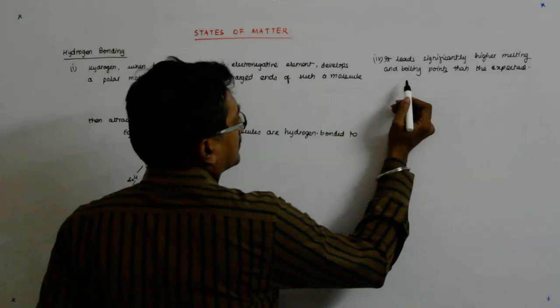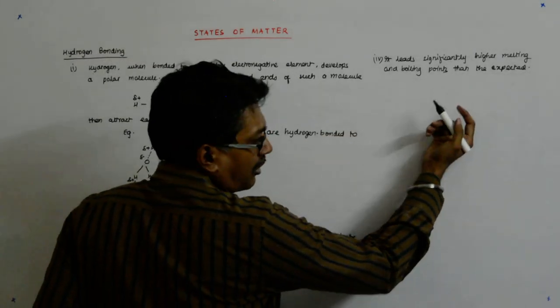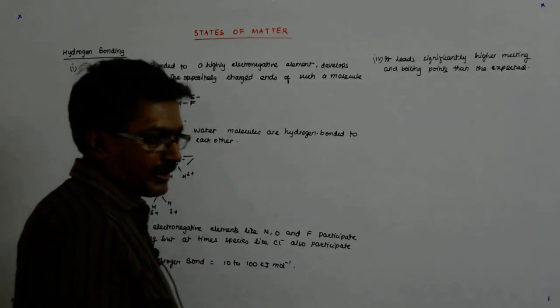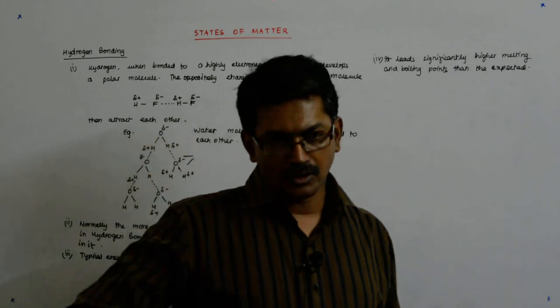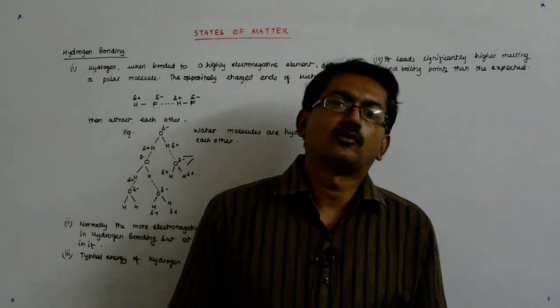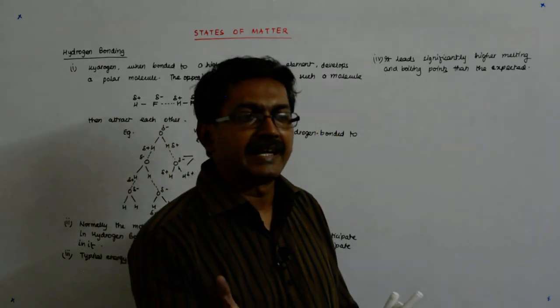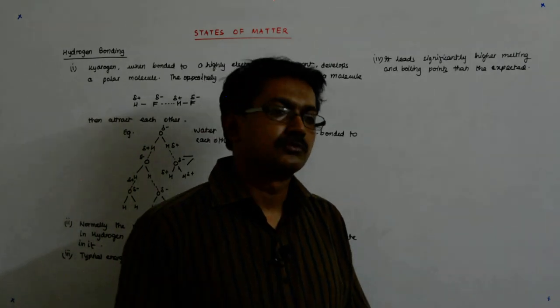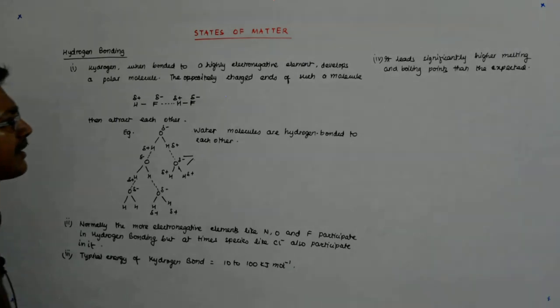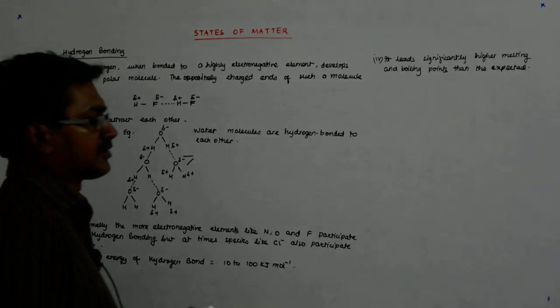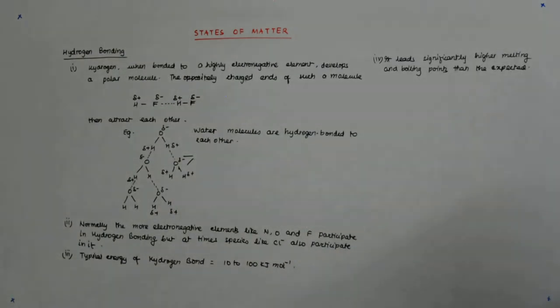For example, methanol. Though it is hydrogen bonded, still it has got a lower boiling point than water because it's only one of the legs that goes into bonding. So we are fortunate that water does not have that, it's not that volatile.